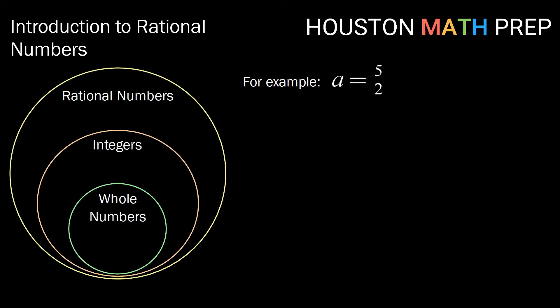Now for our final example, let's talk about five over two. So five over two does not simplify to become a whole number, so it is not in the set of whole numbers. Five over two also does not simplify here to be a positive or negative whole number, so it is not in the integers.